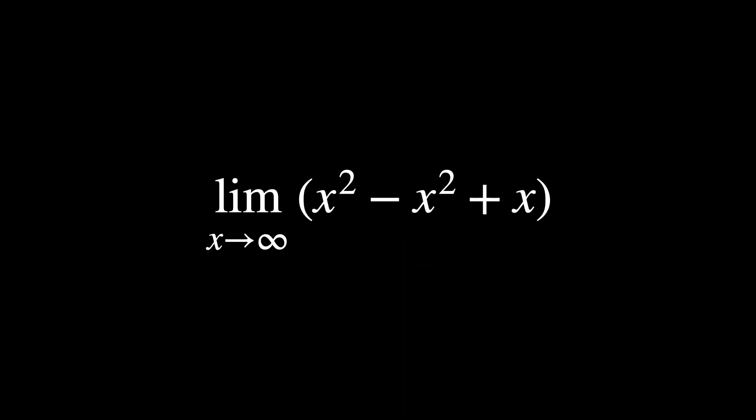Now, consider another scenario where the difference isn't as straightforward. Here, the x squared terms cancel each other out, and what remains is the limit of x, as x tends to infinity, is infinity. In all these cases, the outcome always varies based on every unique situation, because the infinities are different in size.